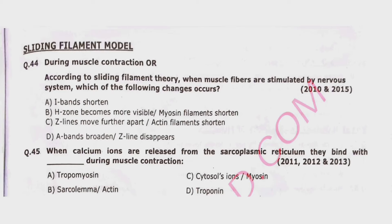Question 44: According to the sliding filament theory, when muscle fibers are stimulated by the nervous system, which of the following changes occurs? Alpha — I band shortens; beta — H zone becomes more visible and myosin filament shortens; charlie — Z lines move further apart and actin filament shortens; or delta — A bands broaden and Z lines disappear. Correct option is alpha — I band shortens.